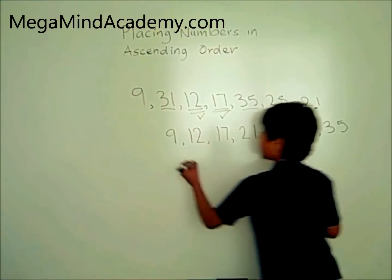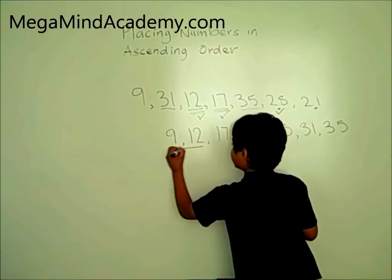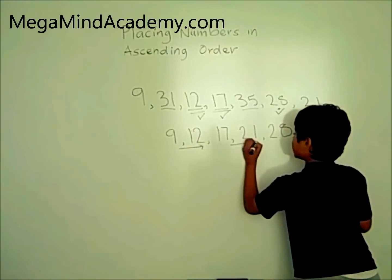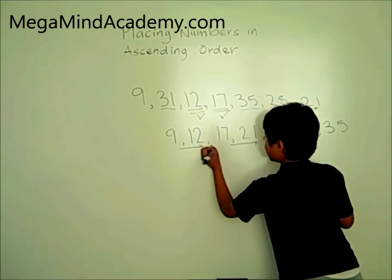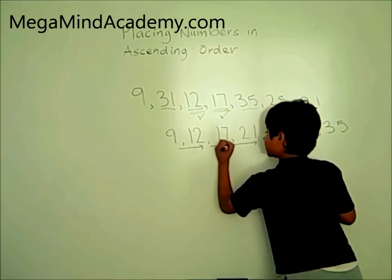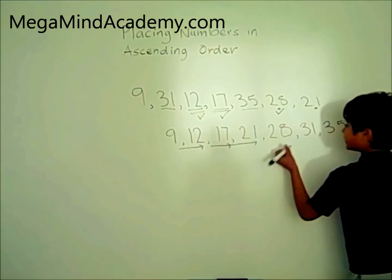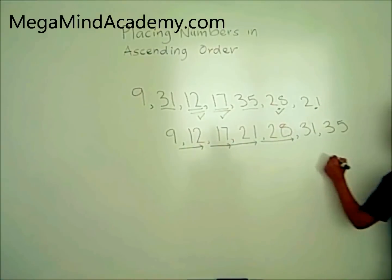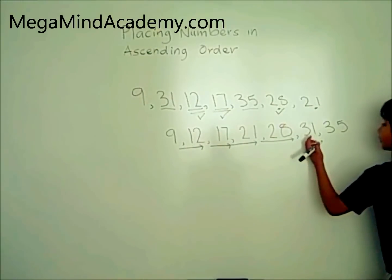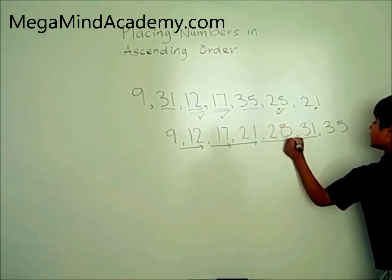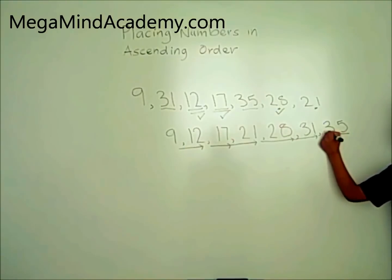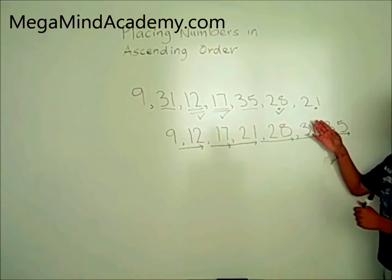Now: 12 is bigger than 9, 17 is bigger than 12, 21 is bigger than 17, 28 is bigger than 21, 31 is bigger than 28, 35 is bigger than 31. And 35 is the biggest number in the set of numbers.